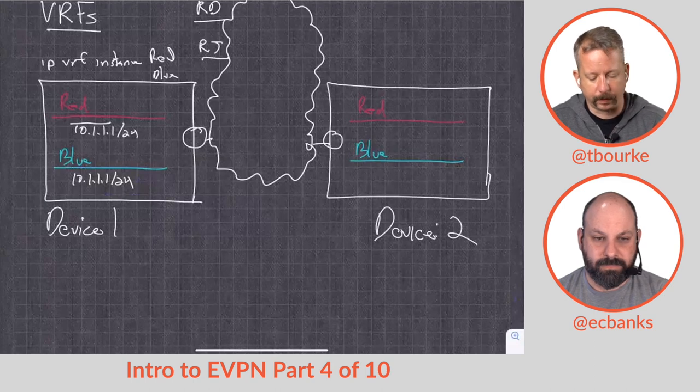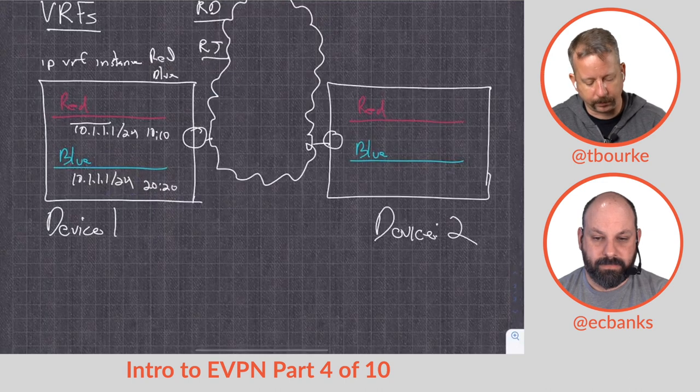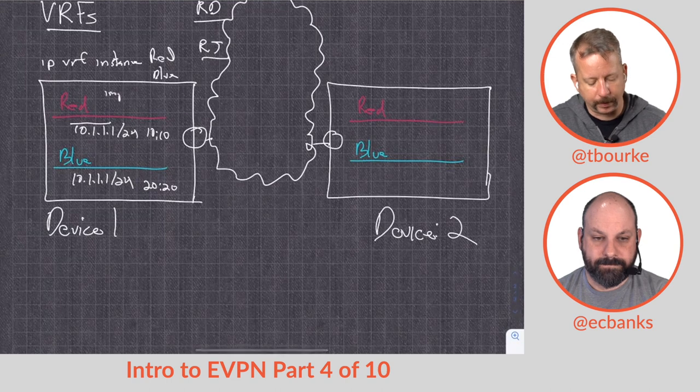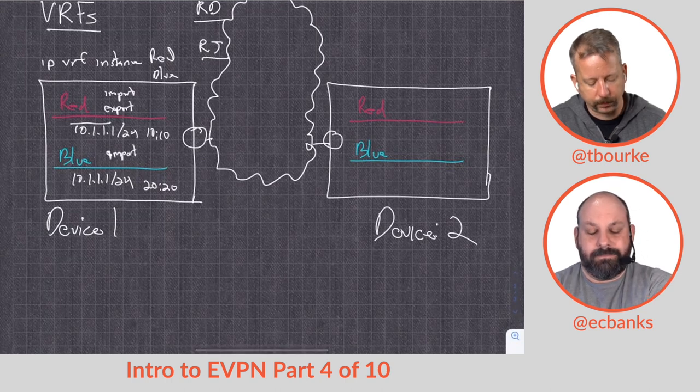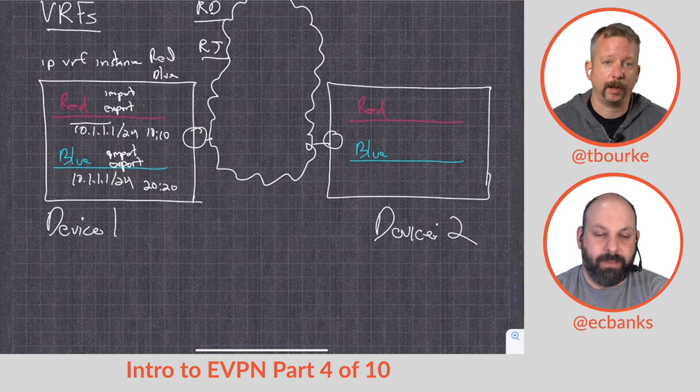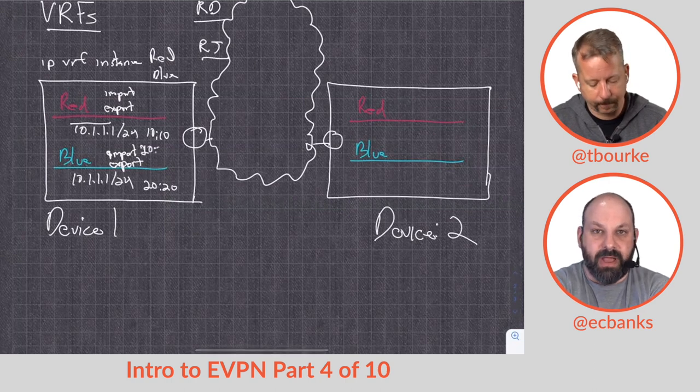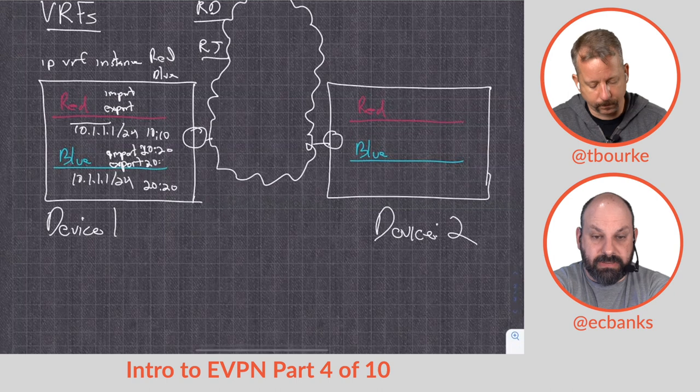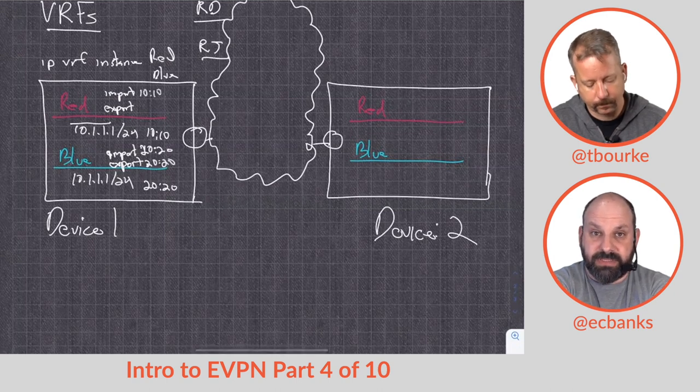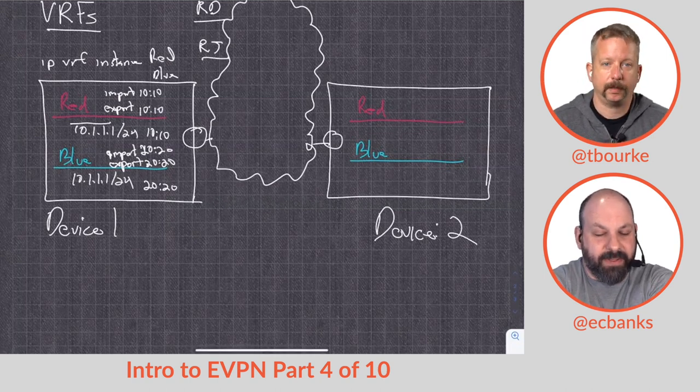So red, we're going to put a route target on it as 10:10, and then blue, we're going to put a route target on it as 20:20. And then we're going to have an import and export statement typically, so that when we import a route and when we export a route, what is the tag we're looking for and what's the tag we're going to throw on it? It's not like a VLAN tag or anything, but what's the RT we're going to put on it? What's the RT we're looking for? The route distinguisher keeps them separate within when they're in a common routing space. The route target says, hey, when you get this route, this is where it needs to go. This is the VRF it needs to end up in. Am I right, is that right?